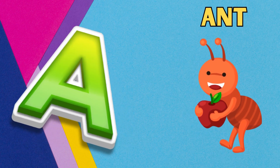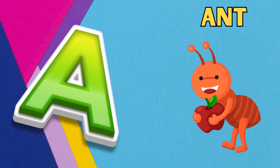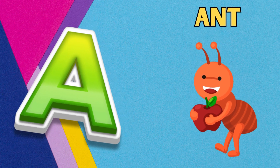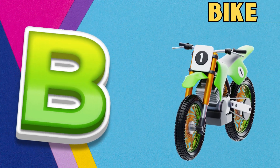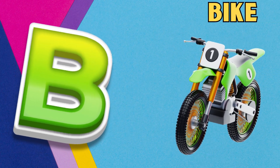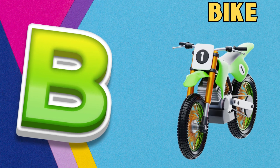A is for ant, a-a-ant. B is for bike, b-b-bike.